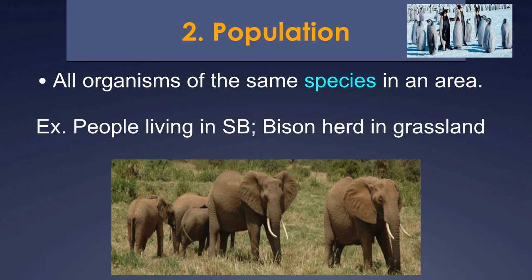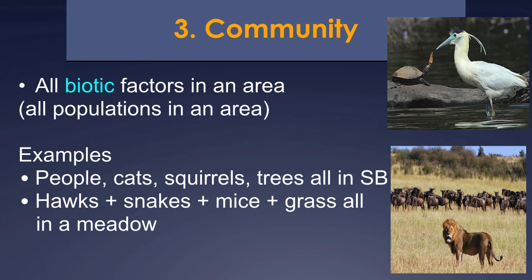The next grouping is community. At the community level, that is all the populations in an area — not just the human population, but the population of cats, dogs, and ants all in Santa Barbara. Another way to put this is all biotic factors in an area. Biotic means living, so all living factors in an area. A meadow community would include hawks, snakes, mice, and grass.